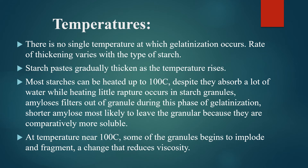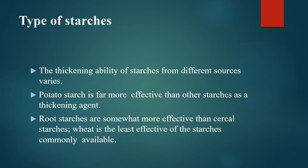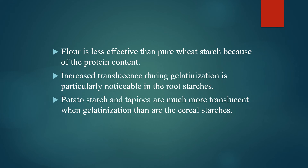The viscosity of the granules varies depending on your product. Thickness depends on the source used as a thickening agent. The plant source — for example potato starch — is an effective thickening agent, while other root starches are somewhat more effective than cereal starches. But commonly in Pakistan we use wheat sources, and wheat starch is considered the least effective starch. Flour is less effective than pure wheat starch because of its protein content.